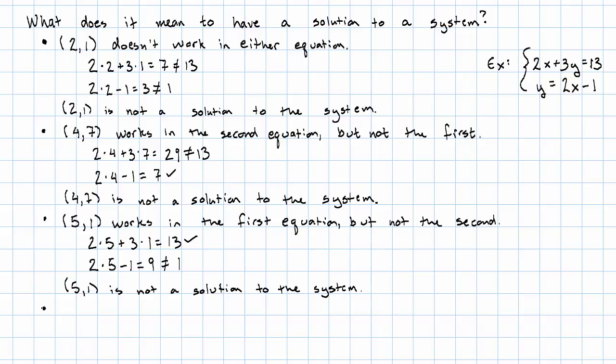What does it look like when a point is a solution to the system? Let's look at the point 2, 3. 2 times 2 plus 3 times 3, that is 13. And 2 times 2 minus 1, that is 3.